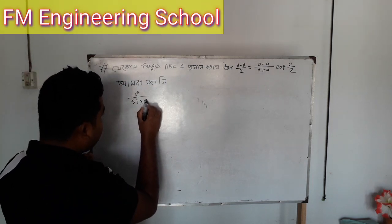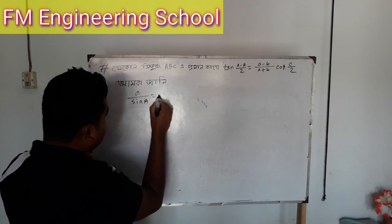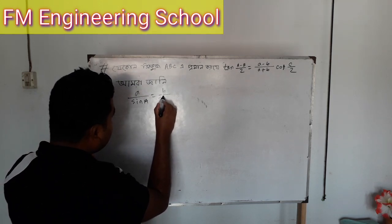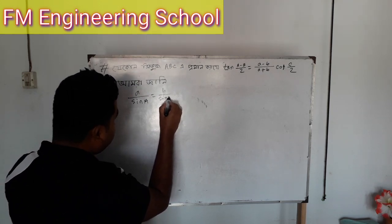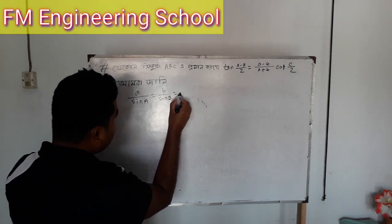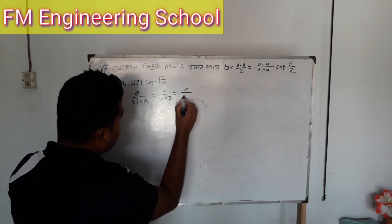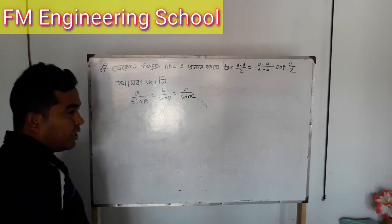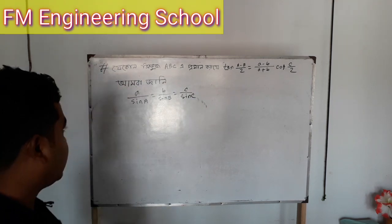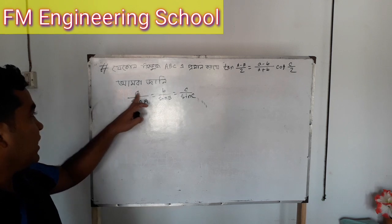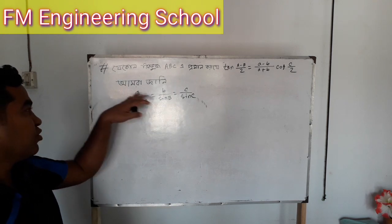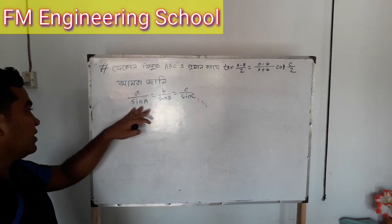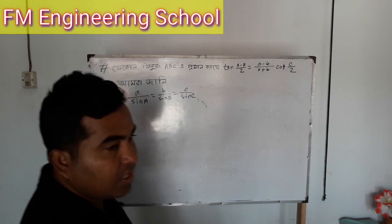This is the combination between A and C: sine A over B equals sine B, which is equal to C over sine C. This is the combination of A, B, C equal to A, B, C and C.